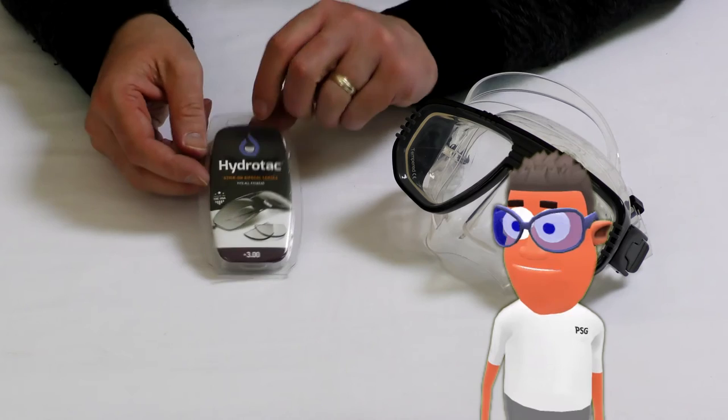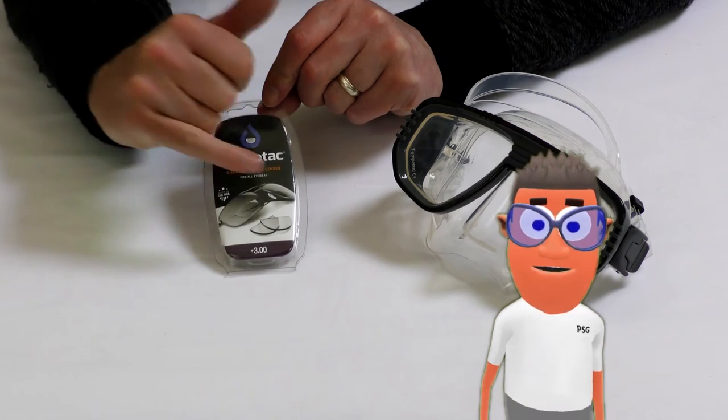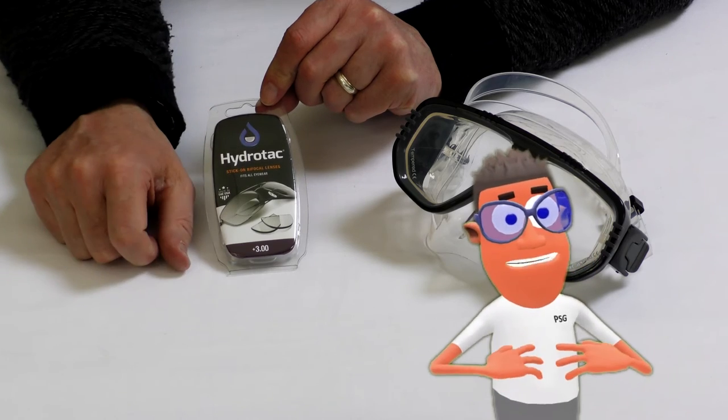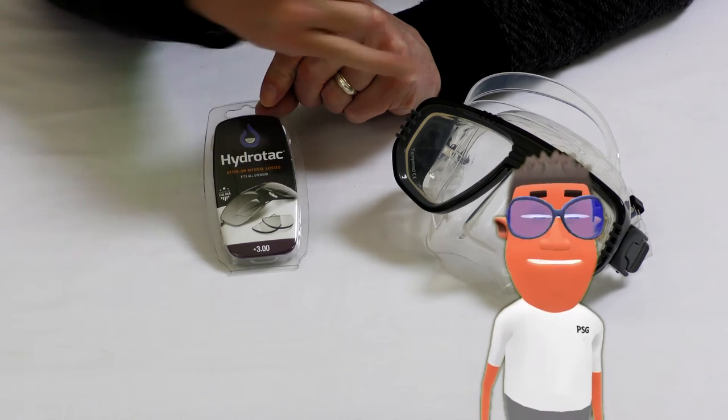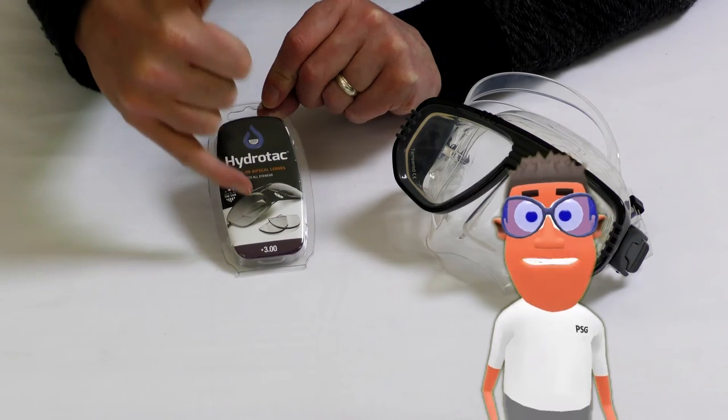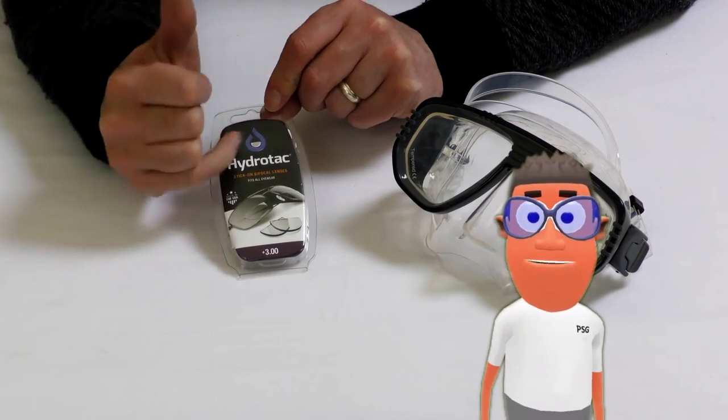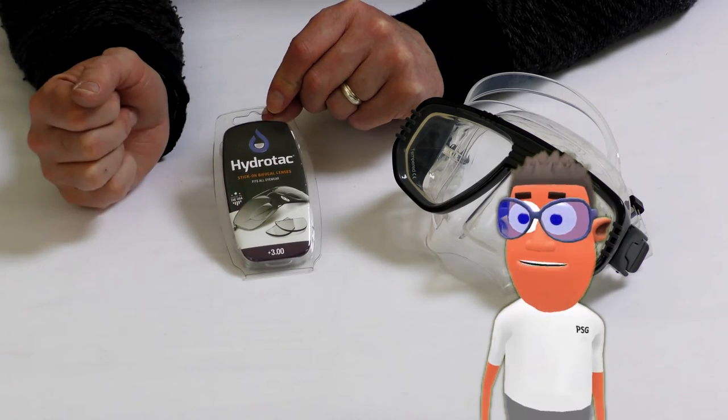One are the HydraTac lenses, which are a little stick-on bifocal segment that you can apply to your own mask or a mask with an all-over distance correction. You are then adding a little segment at the bottom that will stick on. We'll cover how to attach those in a separate video.